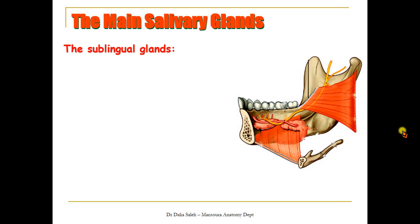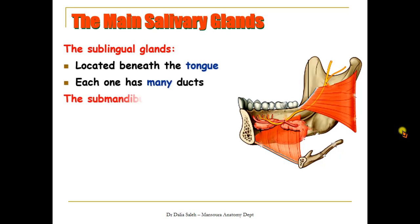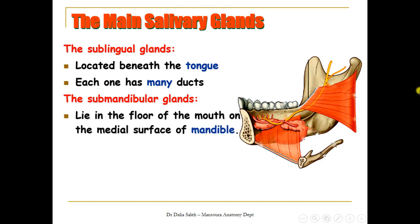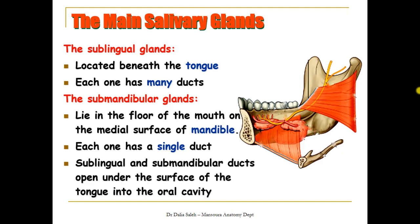The sublingual glands lie beneath the tongue — that is why they are called sublingual glands — and each one has many ducts. The submandibular glands lie on the floor of the mouth on the medial surface of the mandible, and each one has a single duct. The sublingual and submandibular ducts open under the surface of the tongue into the oral cavity.